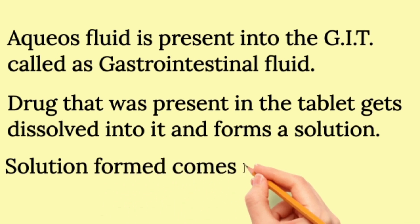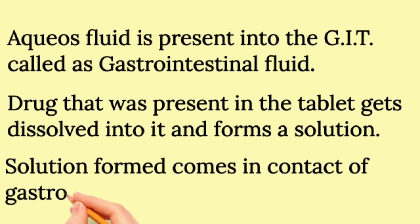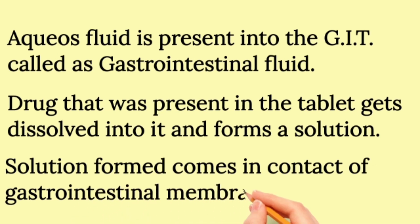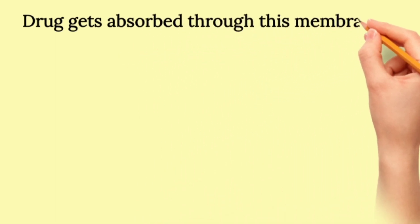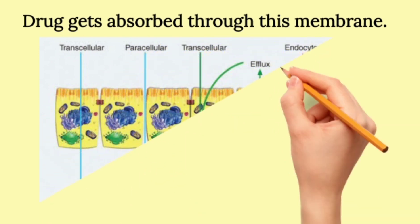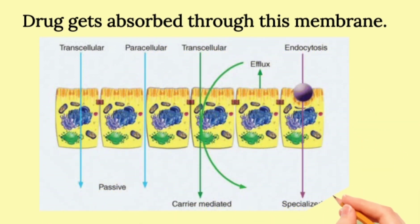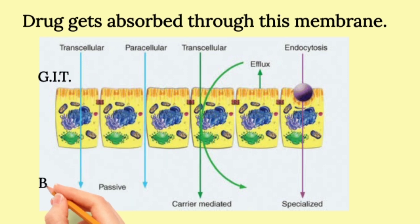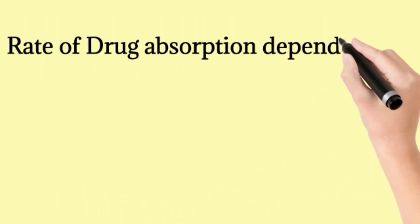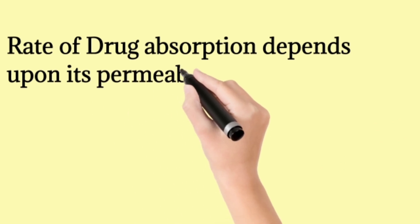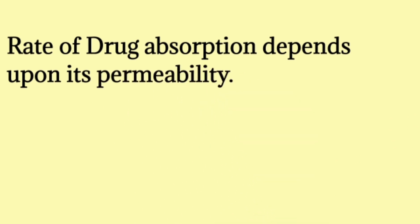This solution then comes in contact with the gastrointestinal membrane, which is a lipid phospholipid bilayer membrane — similar to other membranes in the body. When the drug solution contacts this membrane, the drug gets absorbed through it and goes directly into blood circulation. After that, we determine the drug's bioavailability. The rate of absorption of a drug depends on the permeability of a drug through the intestinal membrane.